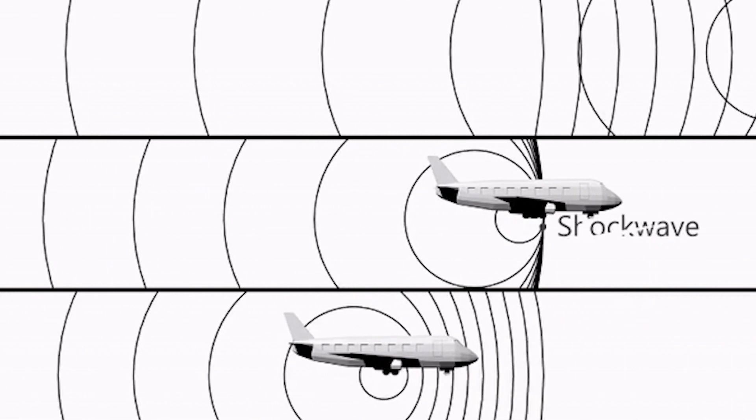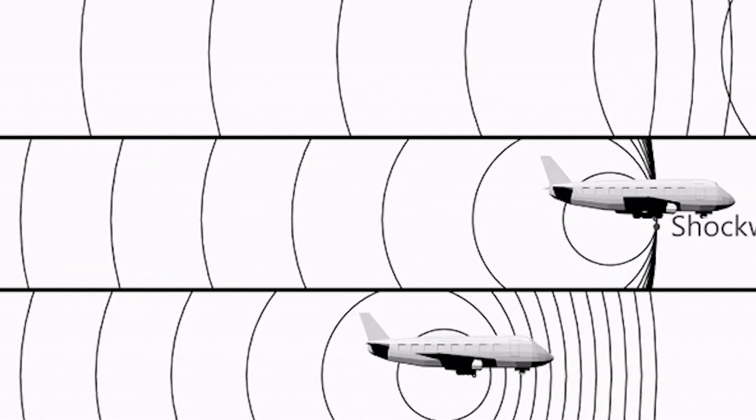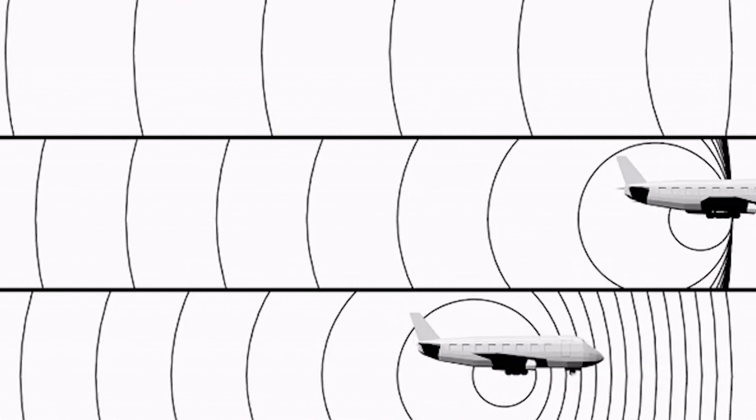When a body is in supersonic speed, the speed of the body is greater than the speed of the wave fronts. The consecutive wave fronts generated by the body do not get sufficient time to flow distinctly. Hence, the consecutive wave fronts superimpose on each other to cause either constructive or destructive interference, in accordance with the principle of superposition of waves. The consecutive interference of pressure or sound waves sums up an enormous amount of energy leading to the formation of shock waves.